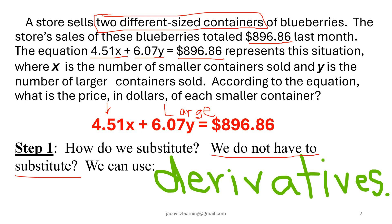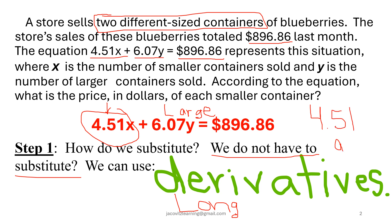You don't have to substitute. You can use derivatives, but this is long — it's going to take you a long time and there's no sense in doing it. The simple answer is this: 4.51. What most people think is that they have to go around and plug something in to get exactly what the answer is, but what is the price in dollars of each small container? They already told you, because it was dollars right there in the equation. So it's 4.51.